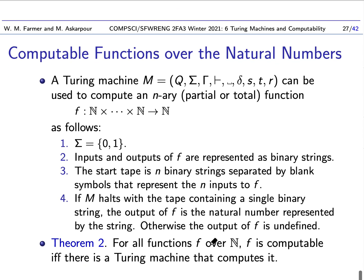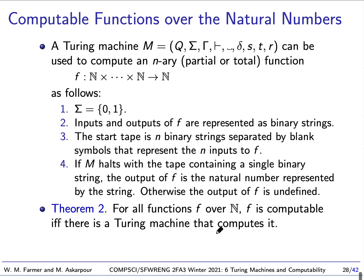So far, we've talked about Turing machines accepting the language or enumerating the language. But Turing machines can also be used to compute n-ary functions like this that take n arguments, return arguments, and they can either be partial or total. We can use the Turing machines just as we've defined to compute such functions. And the way we do it is we use an alphabet. Our input alphabet is of just 0 and 1, and then we represent inputs and outputs of our function using binary strings.